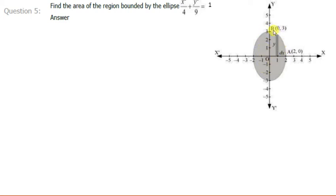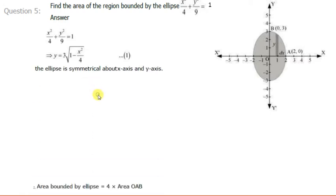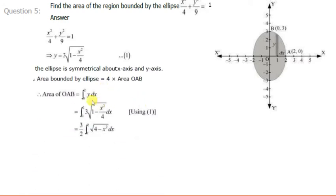To find the area of this part we can use a vertical strip. The height of the strip is y and the width is dx, so the area of this strip is y dx. The area of this whole part is the integral of y dx, and the limits of x are from 0 to 2.